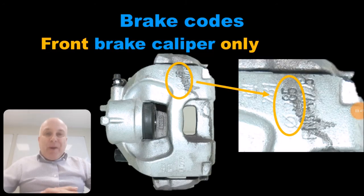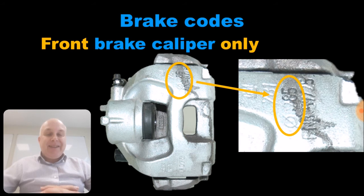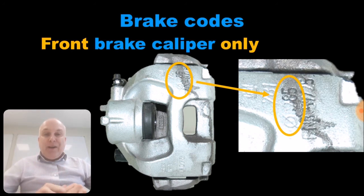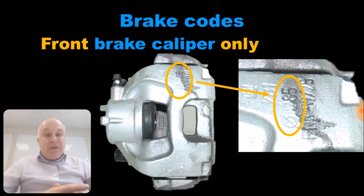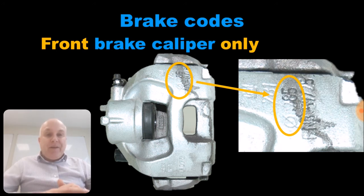As a bonus, the front calipers have the respective disc size cast into them — look there — and depending on the wheels you have, you may be able to see this through the spokes. It is also worth checking this size against the VIN plate codes as a sanity check, to be sure a previous owner hasn't modified the brakes by fitting something from another variant.